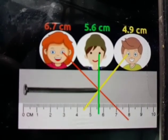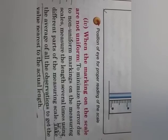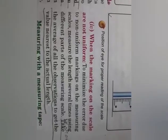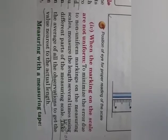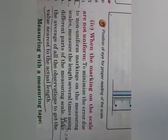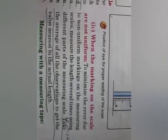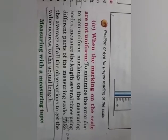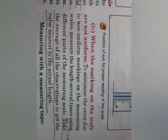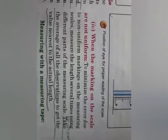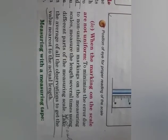When the markings on the scale are not uniform, don't worry — nowadays whatever scales you are getting are very exact and correct. But if you feel in any way that the markings on the scale are not uniform, then take the measurement of the object at least five to six times, add up all the observations you have got, and divide by the number of times you have taken it — that is called the average — and you will get the correct answer.